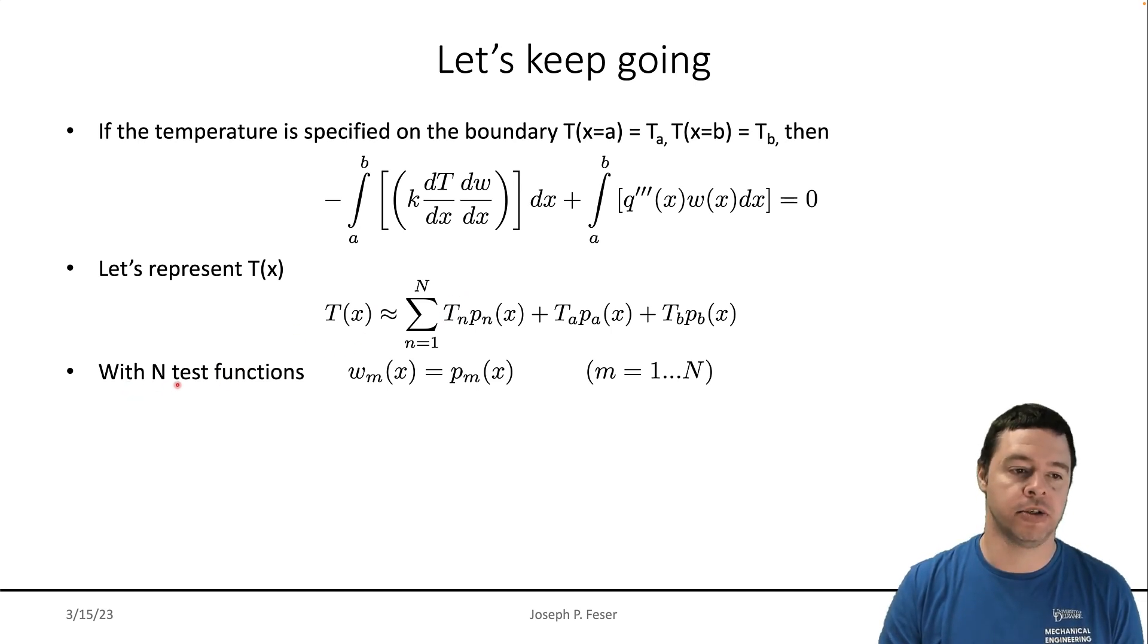Then to that, I'm going to use the test function, N test functions that are constructed exactly the same as these piecewise linear tent functions that go with the temperature. So if there are N of these test interpolation functions for the temperature, then I'll choose the same N of those as my test functions.